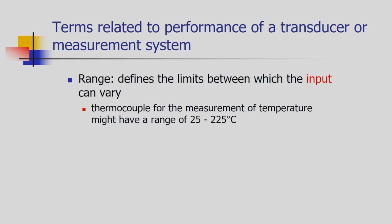The first term is range. Range defines the limits between which the input can vary for that sensor. If you consider a thermocouple used to measure temperature, and its range is from 25 to 225 degree Celsius, that means the minimum temperature the sensor can measure is 25°C and the maximum is 225°C. So the range is 25 to 225 — the limits between which the input can vary.